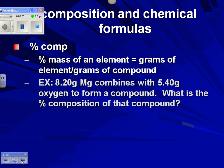One of the easiest ways to do it is to combine magnesium and oxygen. In this example, we have 8.20 grams of magnesium and 5.40 grams of oxygen, so all told this compound is going to weigh 13.60 grams. Now all we have to do is take the part — divide our magnesium, 8.20, divided by the whole, 13.60.